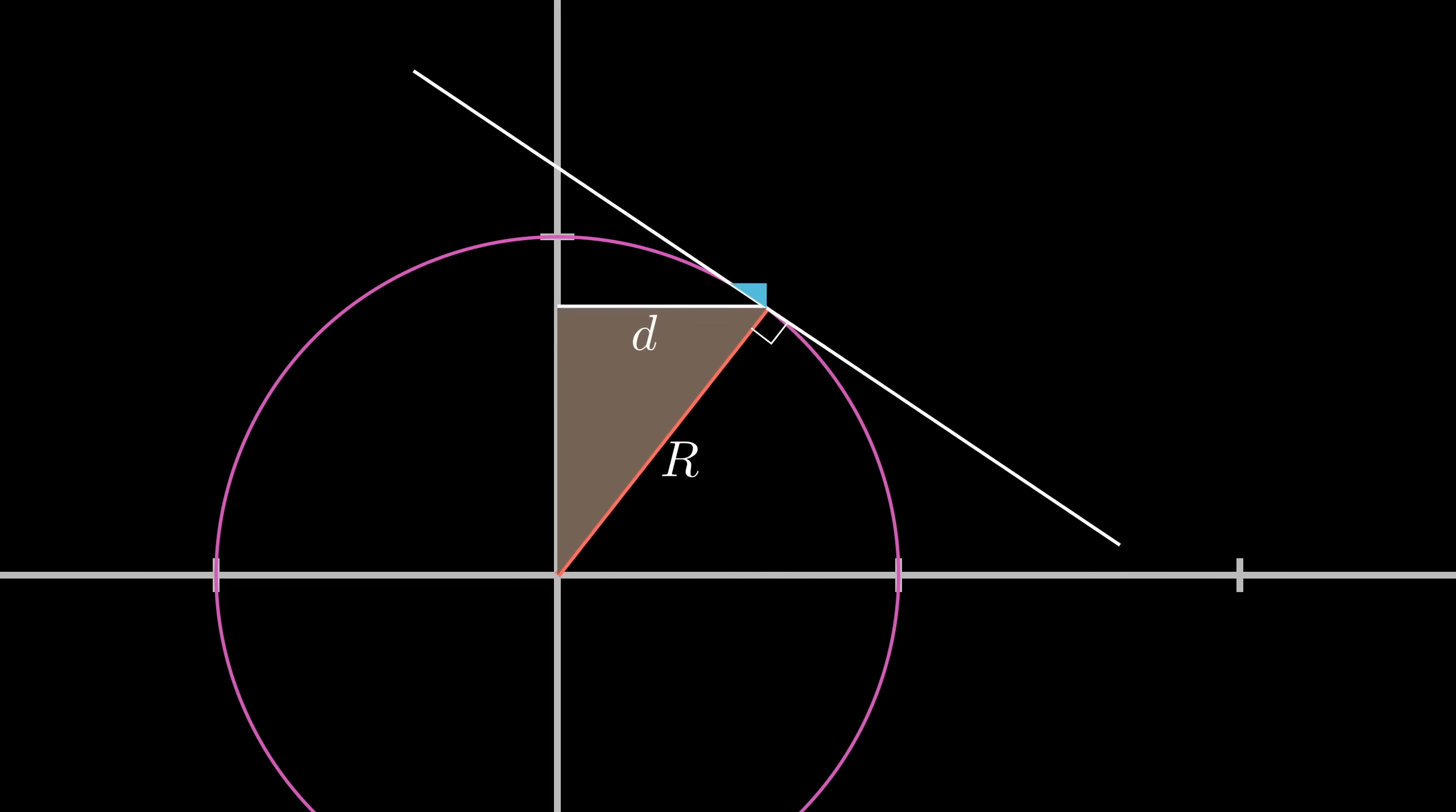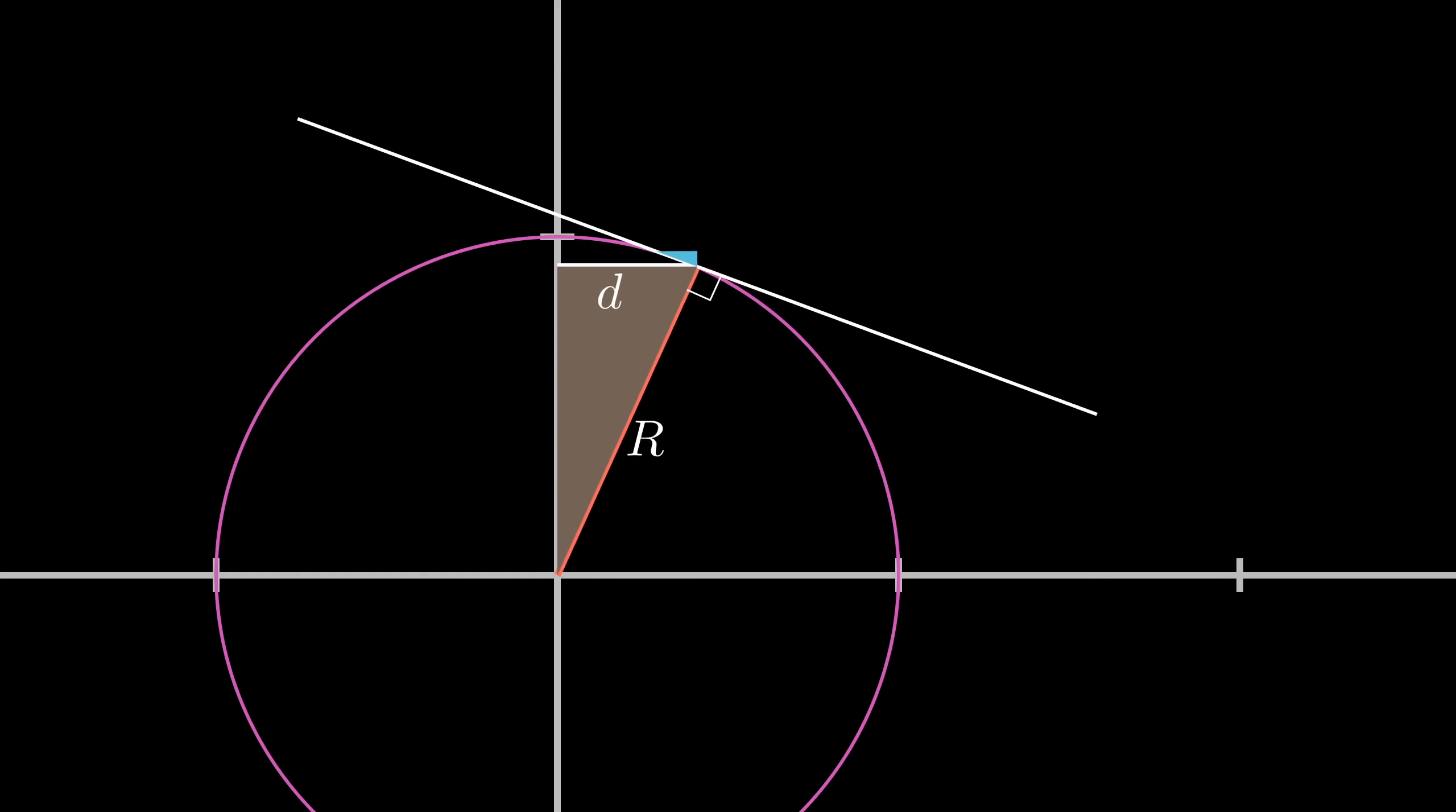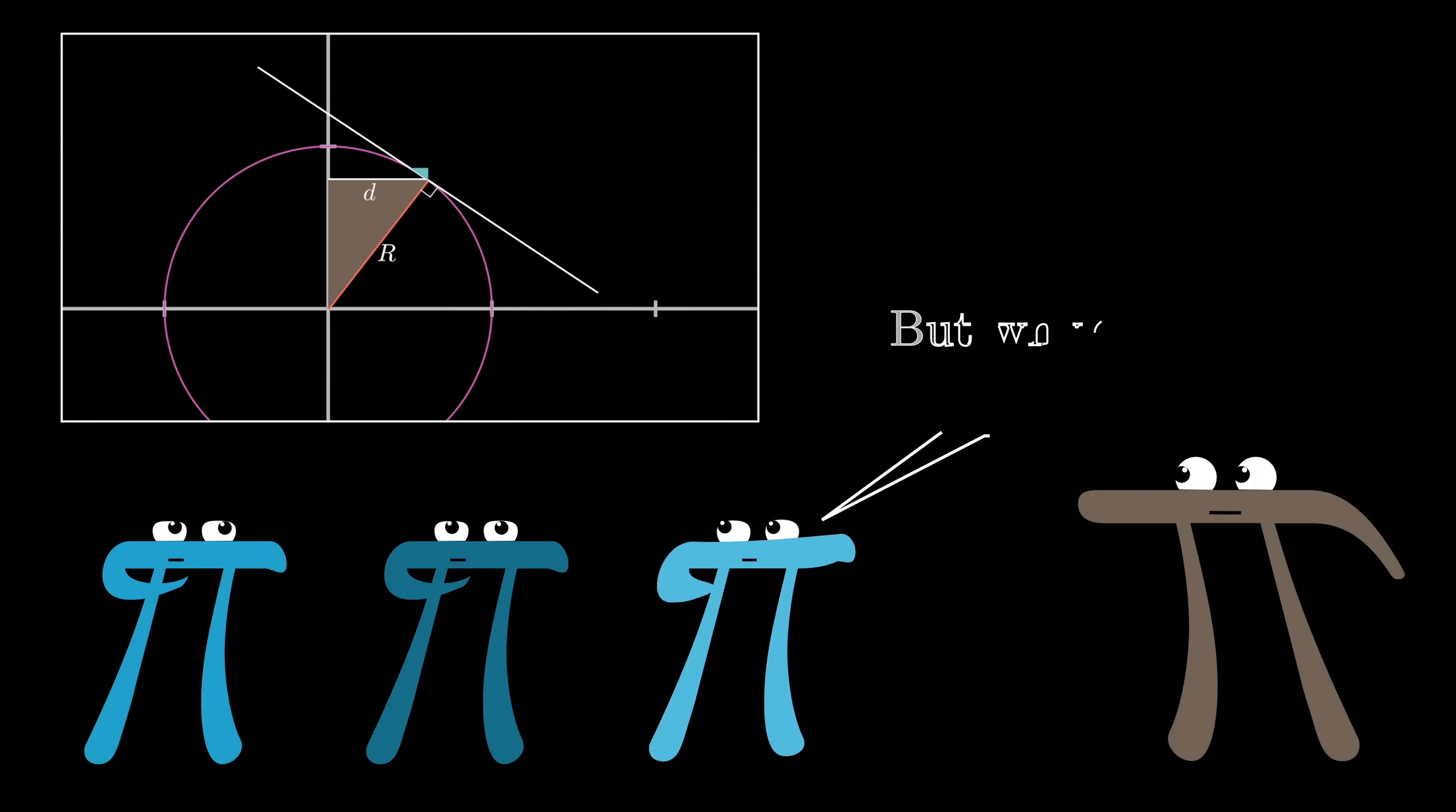In this case, you might predict that the two triangles I've drawn are similar to each other, since their shapes seem to change in concert with each other. This is indeed true, but as always, don't take my word for it. See if you can justify this for yourself.